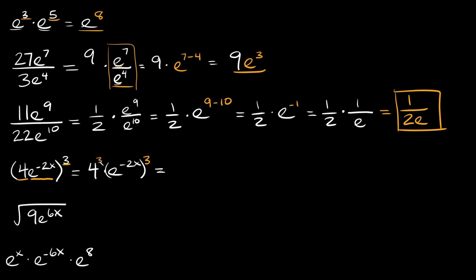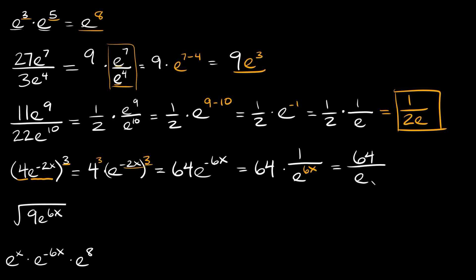4 cubed equals 64. Then e raised to the negative 2x all raised to the third power — whenever you have an exponent raised to another exponent you just multiply them together, so that gives negative 6x. We have 64 times e raised to the negative 6x. Since we have a negative exponent, we simplify to a fraction: 64 times one over e raised to the positive 6x, which gives us 64 over e raised to the 6x.